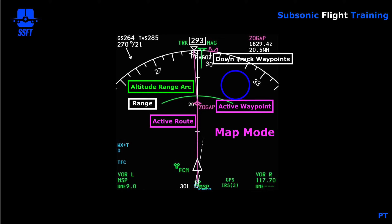You have an altitude range arc — this green arc — and whenever you're making a climb or descent, it shows where you're going to reach the MCP selected altitude based on your current vertical rate. As your vertical speed changes, that altitude range arc will move in and out as well.